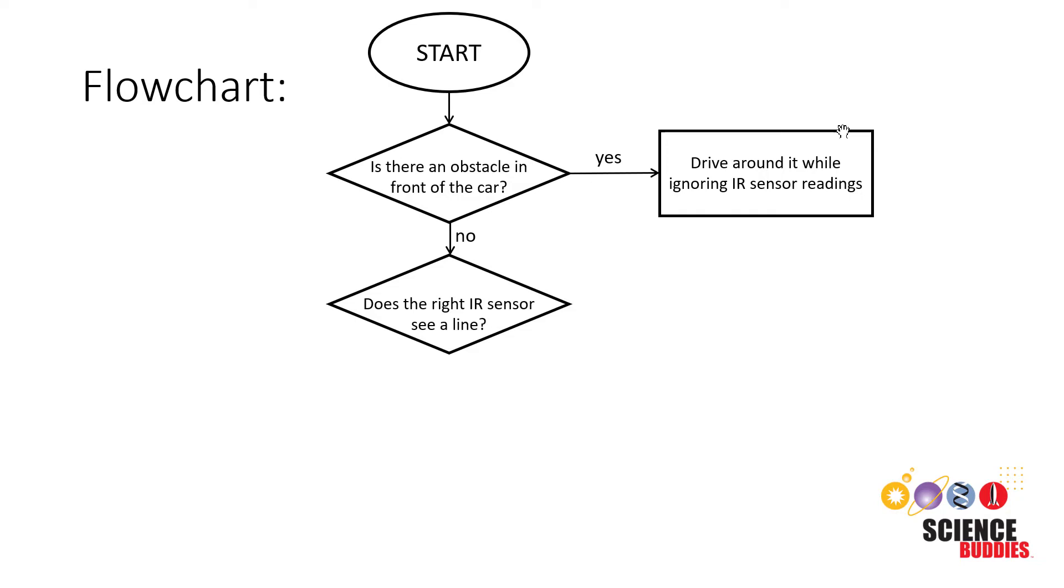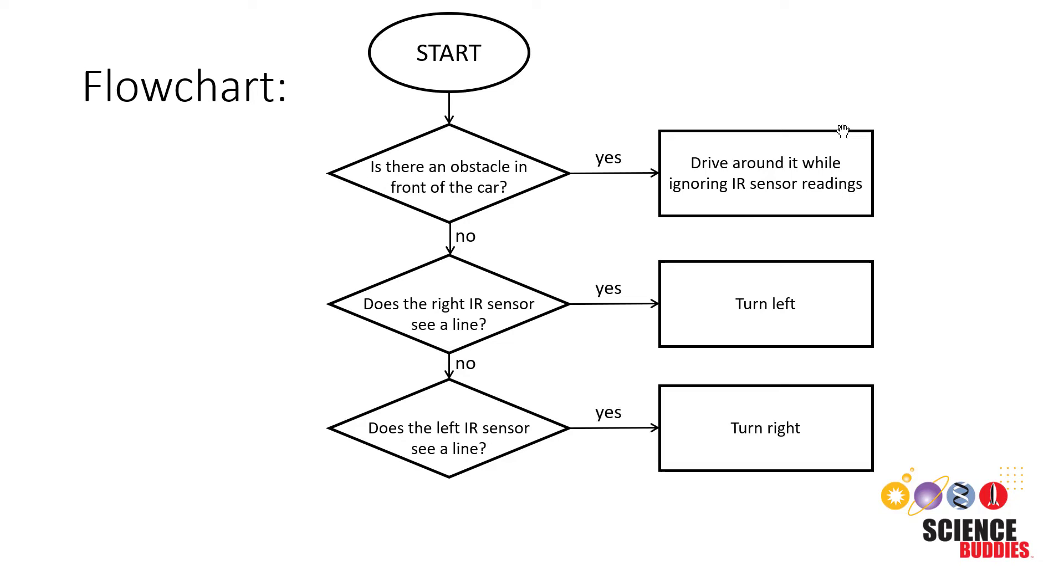If yes, we're going to turn left to stay on the road. If the right infrared sensor does not see a line, then we're going to check if the left infrared sensor sees a line. If yes, we know we need to turn right to stay in the road.